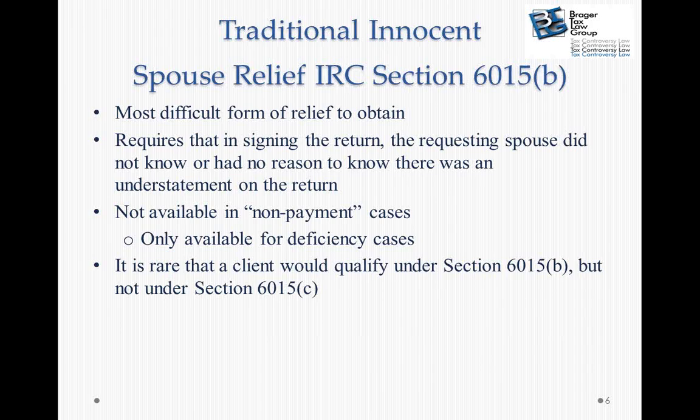Both traditional innocent spouse relief and spousal allocation are not available in non-payment cases — only in deficiency cases. In a non-payment case, the return is filed with everything properly reported, but the amount due is not submitted with the return. A deficiency case is where the return is filed, the IRS audits, and determines there's a deficiency. Only in deficiency cases can you use traditional innocent spouse relief or spousal allocation.